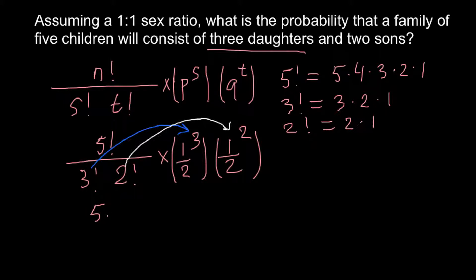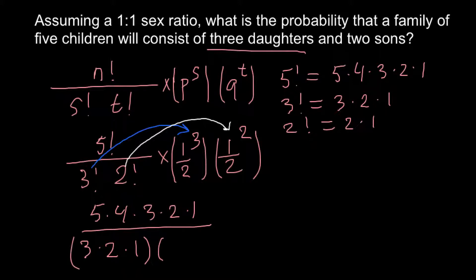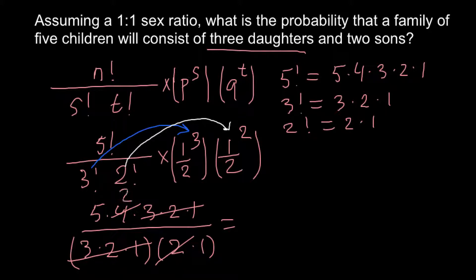Now let's solve this problem. 5 factorial is 5 × 4 × 3 × 2 × 1, divided by 3 factorial which is 3 × 2 × 1, and 2 factorial which is 2 × 1. As you can see, there are common numbers that we can cancel out, and we can also reduce 4 and 2, leaving us with 10 on top divided by 1, so this gives us 10.